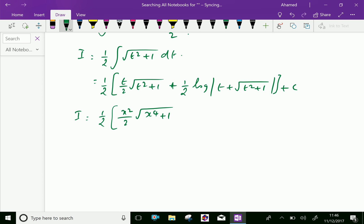Because we have t squared, plus one-half into log, t is x squared plus square root of x to the power 4 plus 1, plus c. Now,